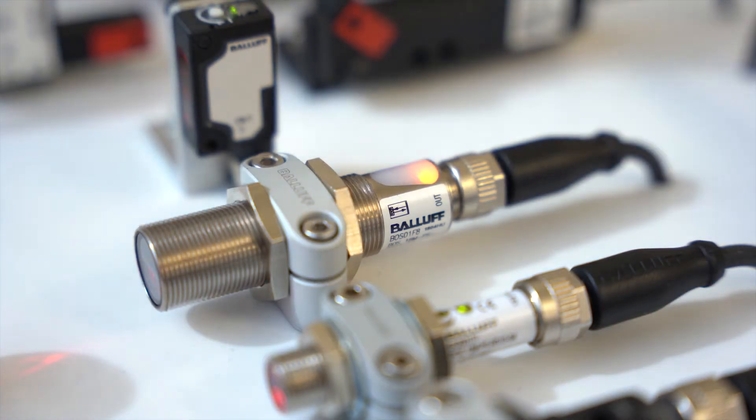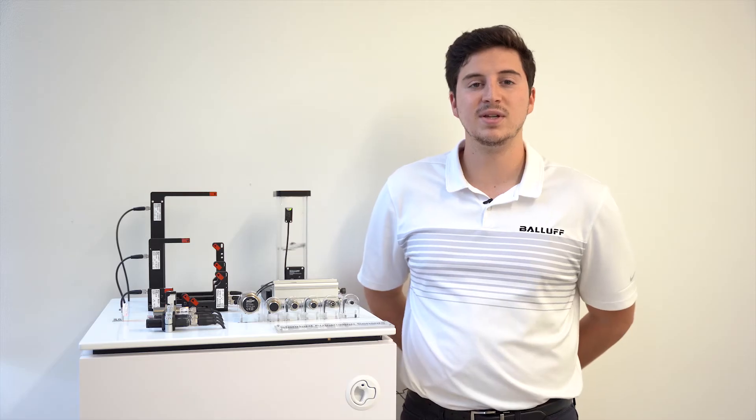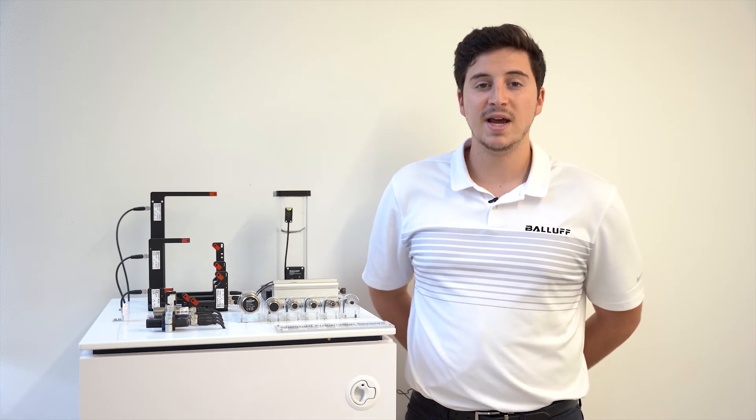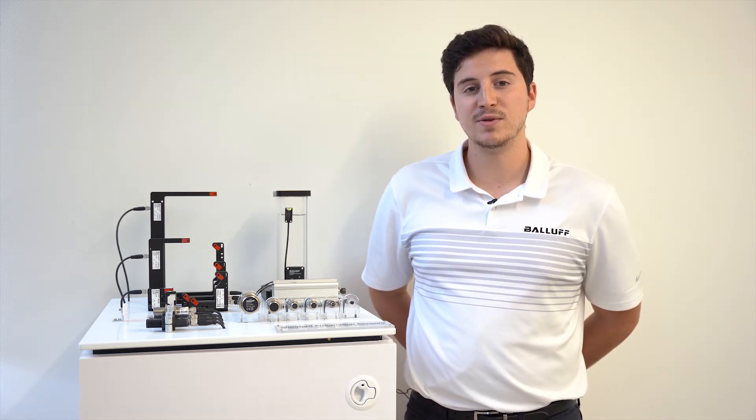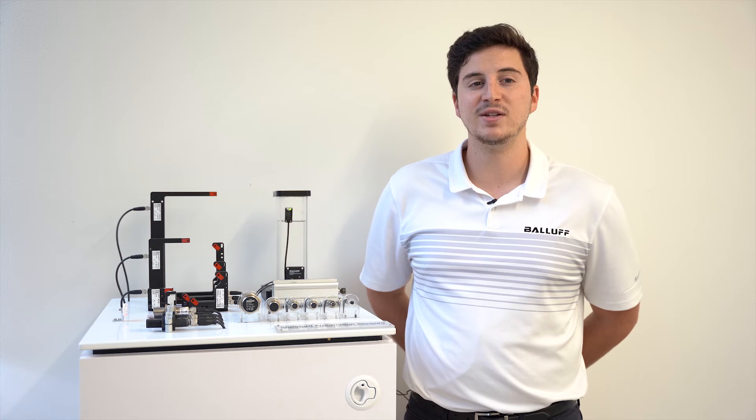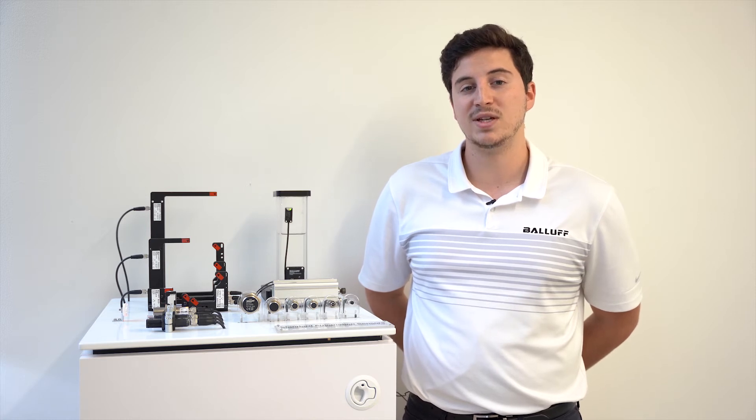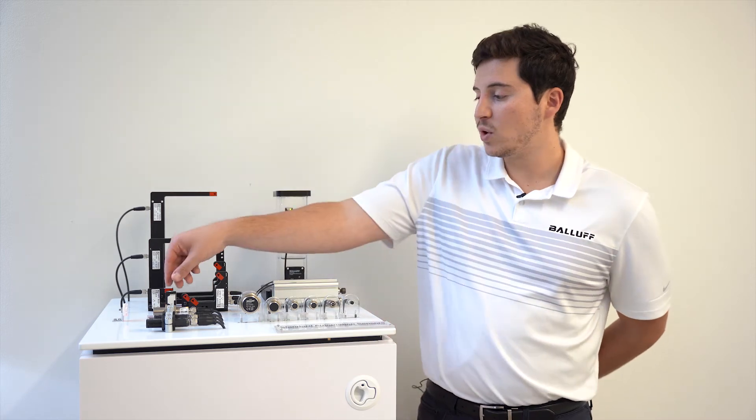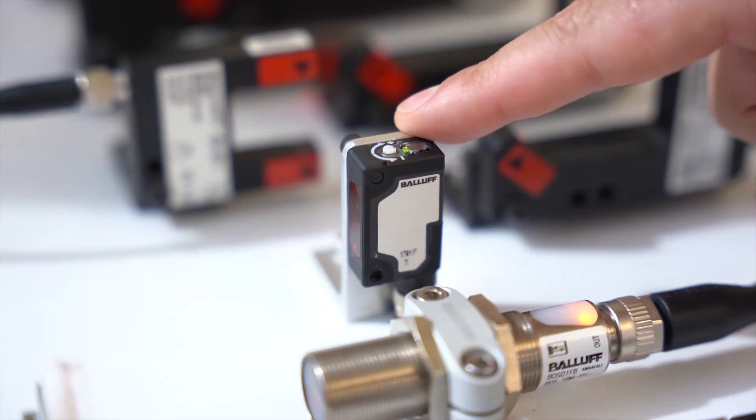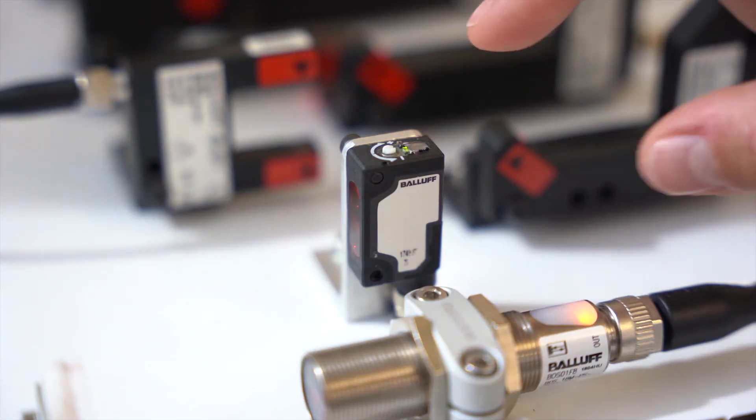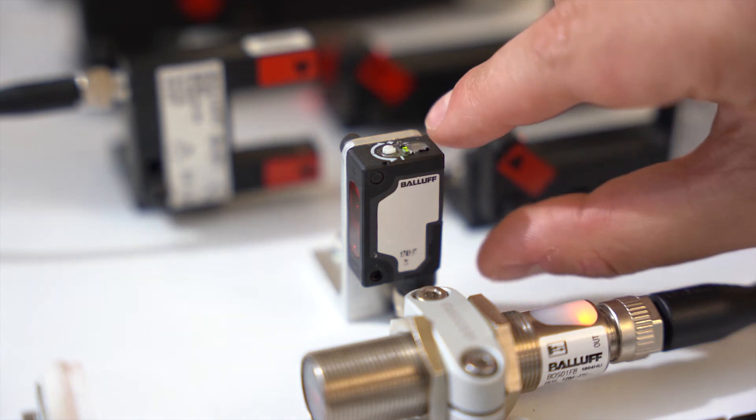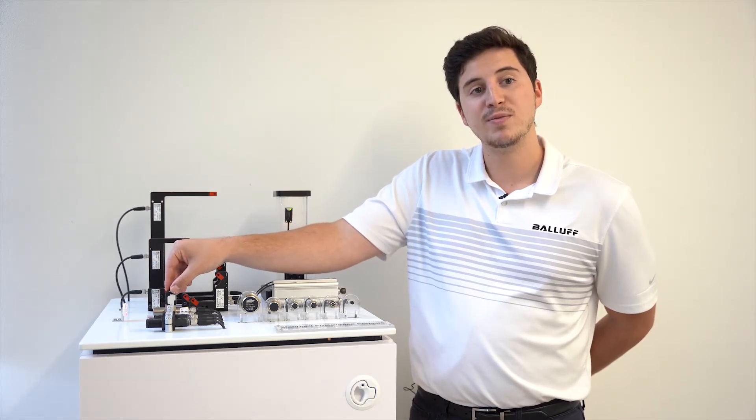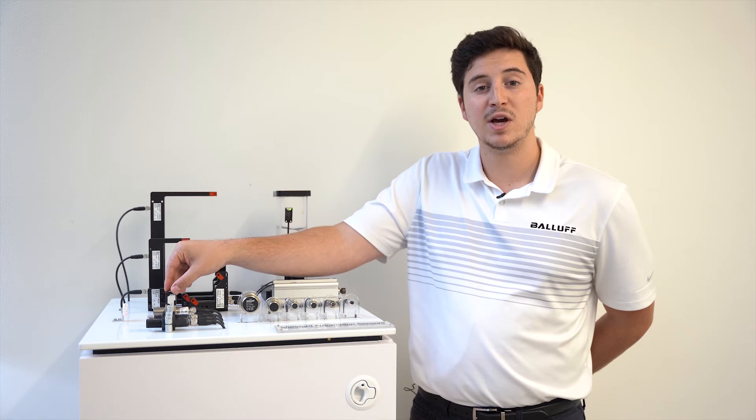Diffuse sensors are ideal for detecting differences and contrasts. They detect objects depending on their surface and material by the light beam reflecting off the object back to the receiver in the sensor. This little guy here uses an infrared light beam, which is invisible to the human eye. But as you can see, its small form factor also makes it great for tight spaces and tight applications.